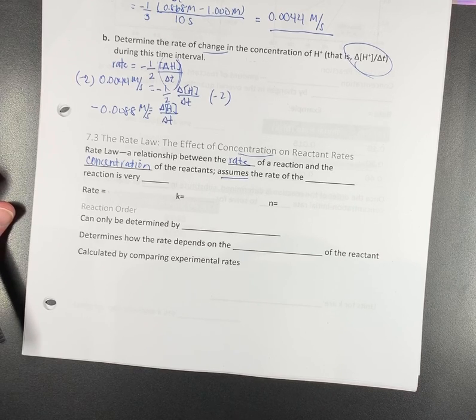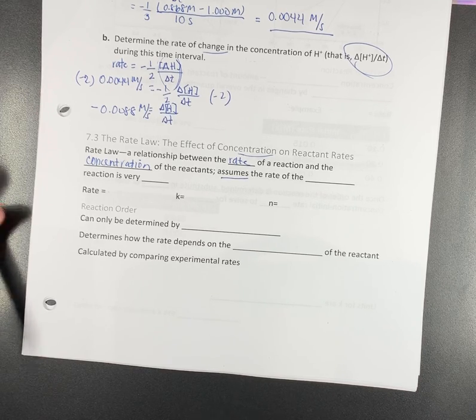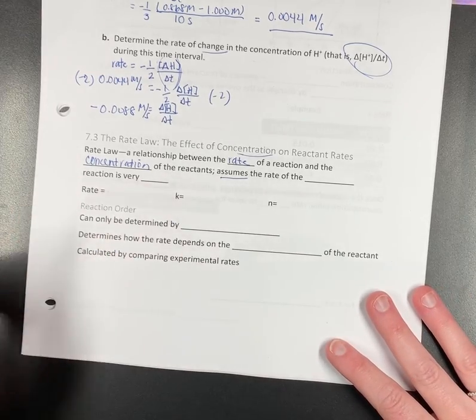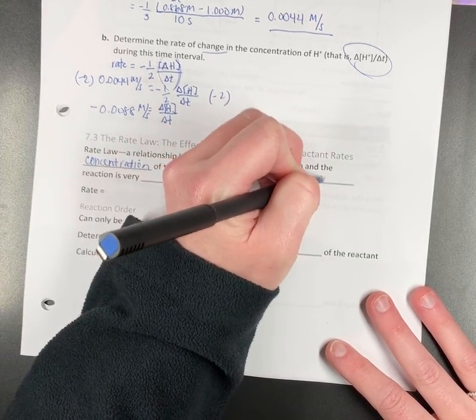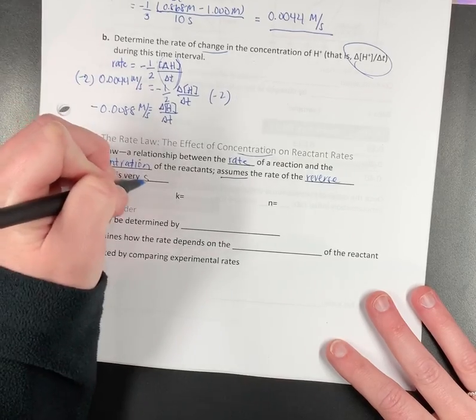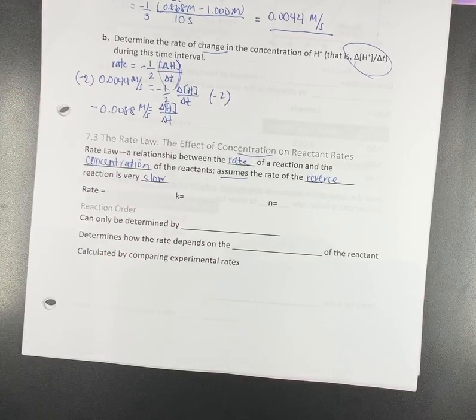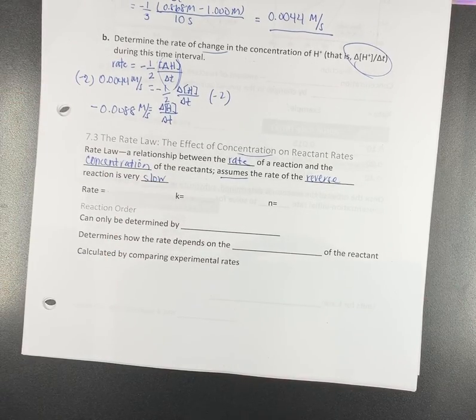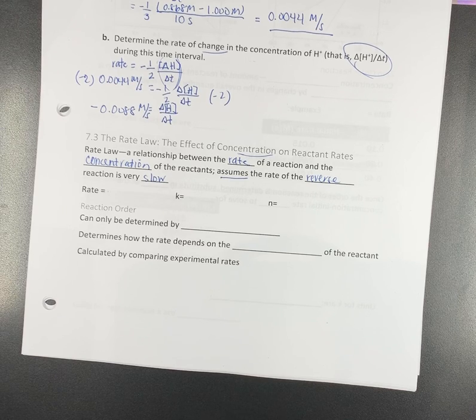So this assumes the rate of the reverse reaction is very slow. This assumes we're only going forward and we're not going backwards. That'll change when we do equilibrium, but not yet.